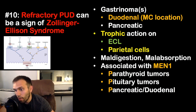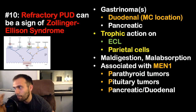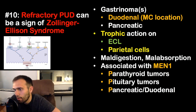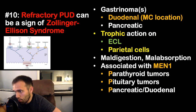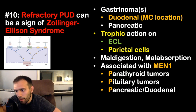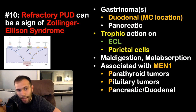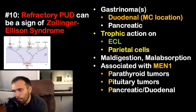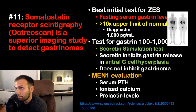Zollinger-Ellison syndrome is associated with MEN1. To diagnose MEN1, you need two of the three P's: parathyroid tumors (elevated PTH, hypercalcemia, kidney stones, bones/stones/groans), pituitary tumors (prolactin or growth hormone excess, bitemporal hemianopsia from optic chiasm compression), and pancreatic islet cell tumors (insulinomas, VIPomas, glucagonomas, gastrinomas).